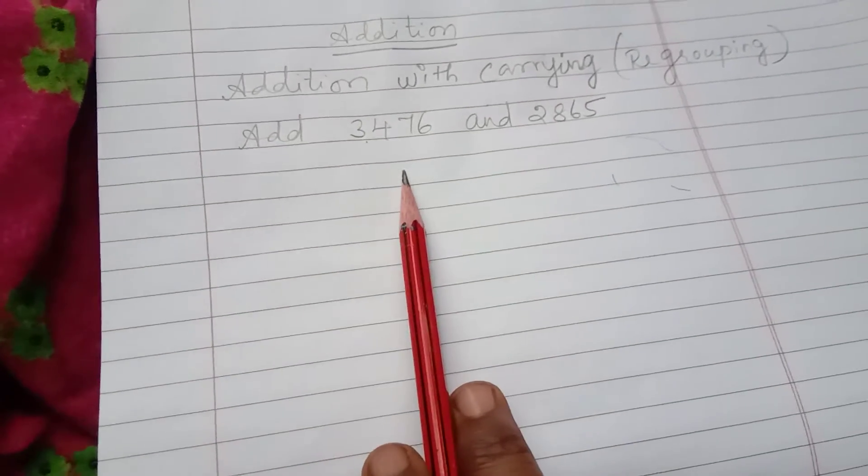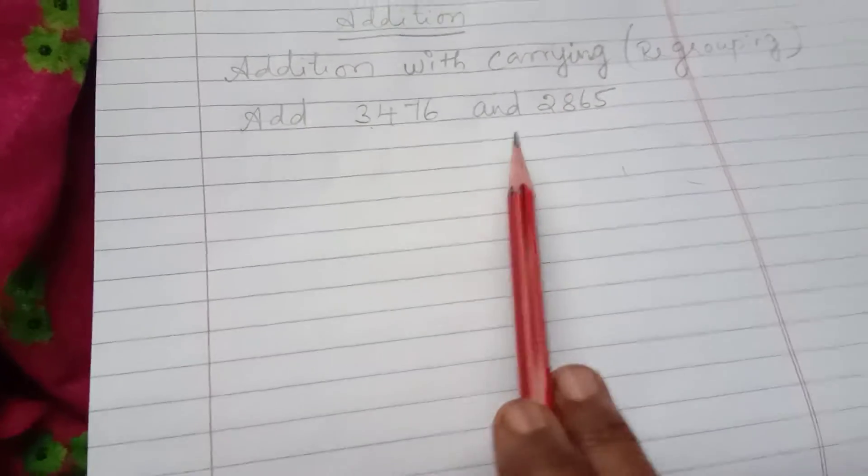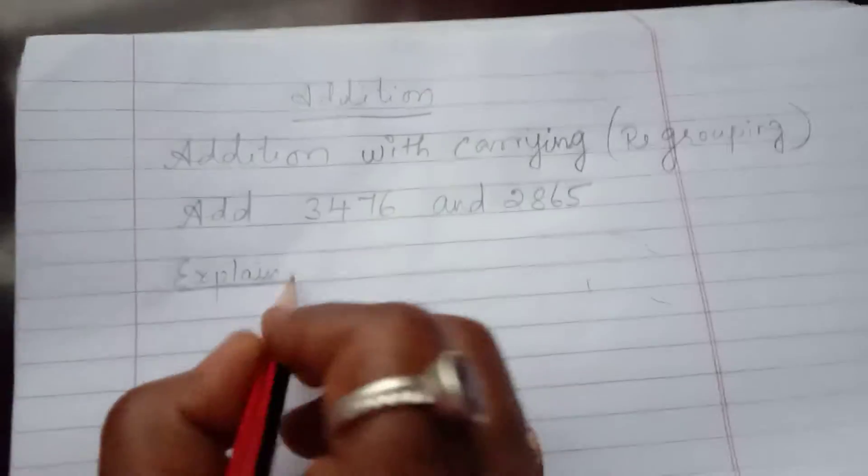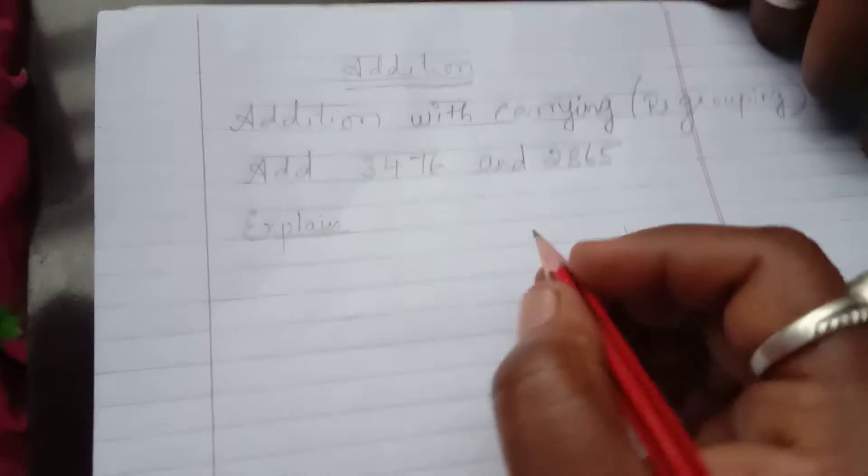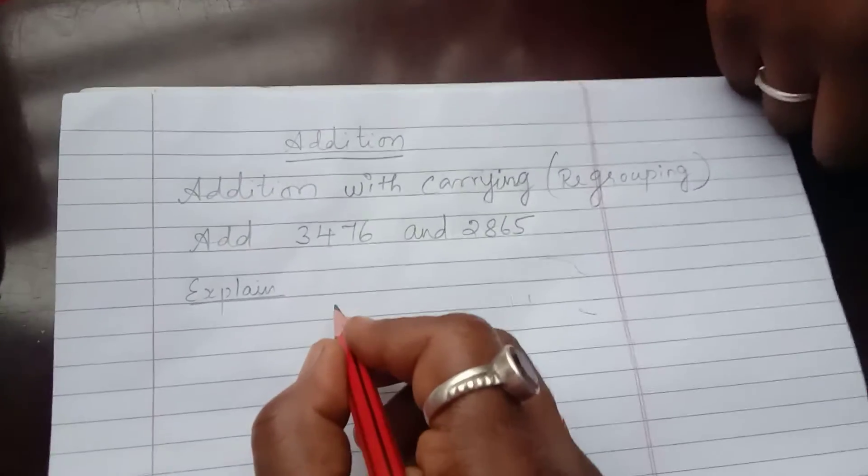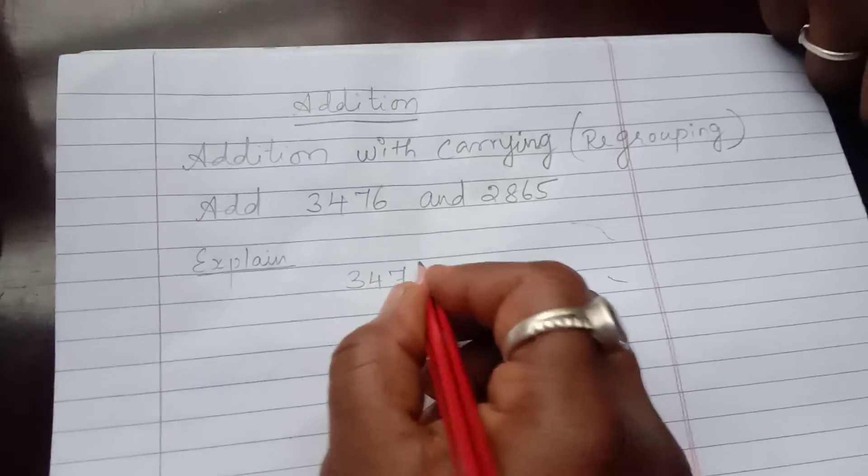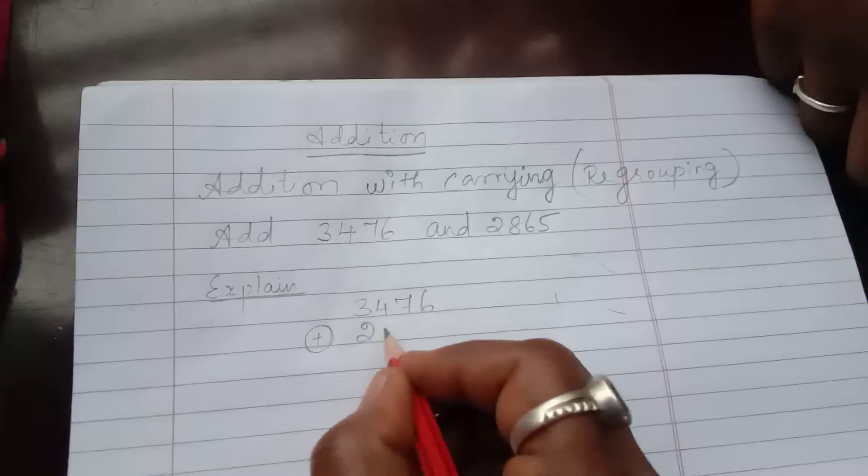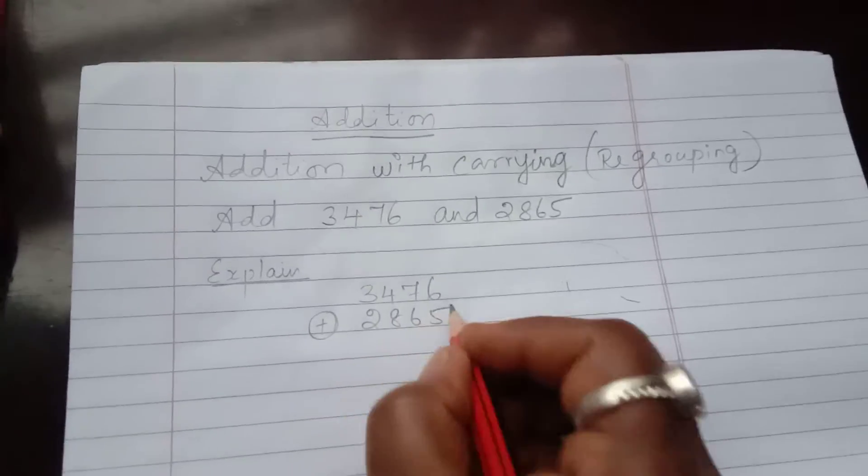Add 3476 and 2865. I am explaining in detail, okay. So I will write 3476 adding 2865.